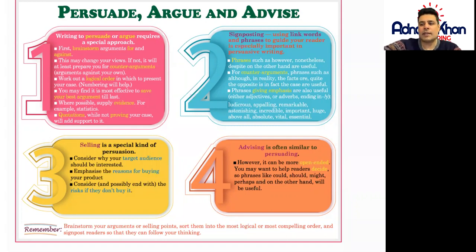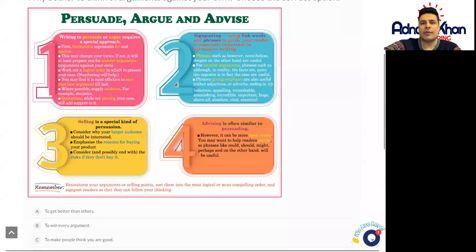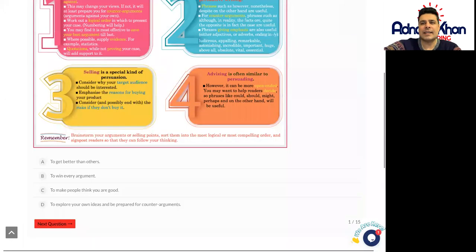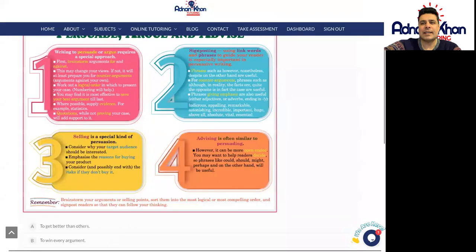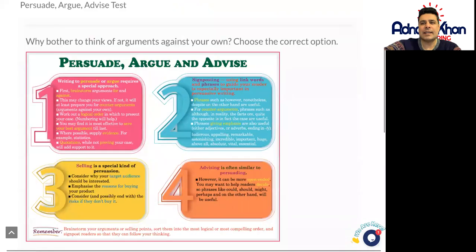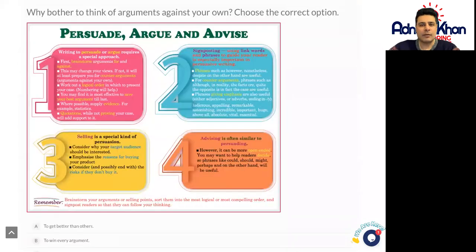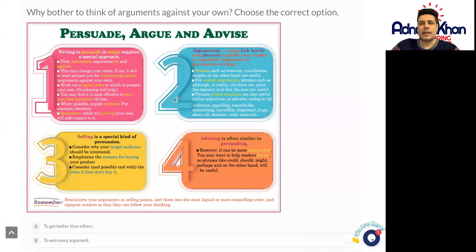Now, you've got in total 15 questions from this particular exercise. Have a read of it one more time, then answer the follow-up questions. And remember these key points when you're writing — whether persuading, arguing, advising or selling in the future.